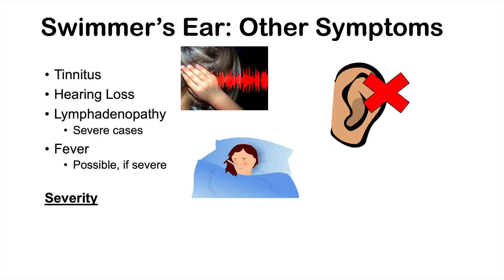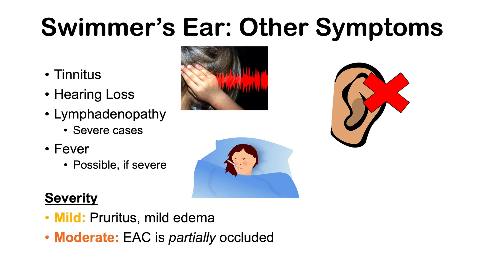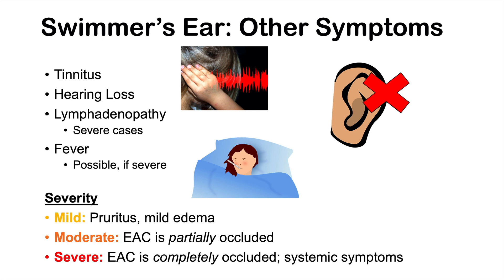Regarding severity: in mild swimmer's ear, there is pruritus, mild edema, and mild discomfort. In moderate swimmer's ear, the external auditory canal is partially occluded with moderate pain. In severe swimmer's ear, the external auditory canal is completely occluded with significant erythema and edema, and there are often systemic symptoms like fever, lymphadenopathy, and malaise.